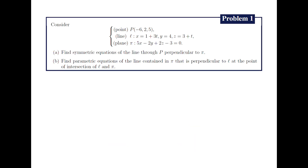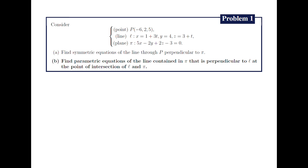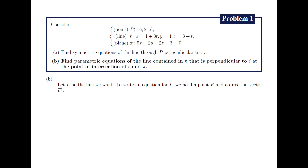Problem 1b asks us to find the parametric equations of the line contained in the plane pi that is perpendicular to the line script L at the point of intersection of script L and pi. First, we name the line that we wish to find as capital L. Again, to write an equation for capital L, we will need a point R in capital L and a direction vector which we will call V sub L.